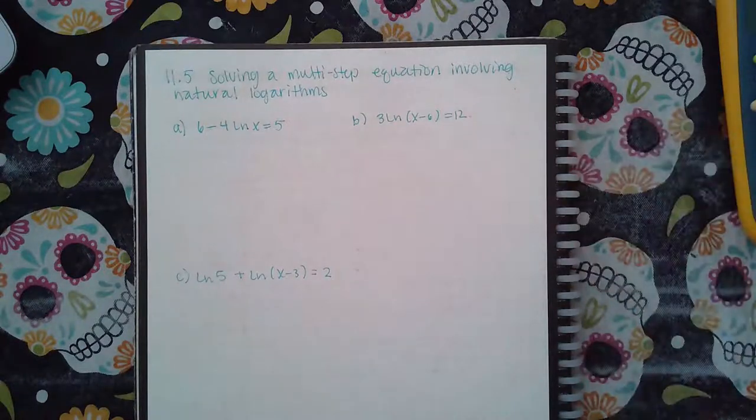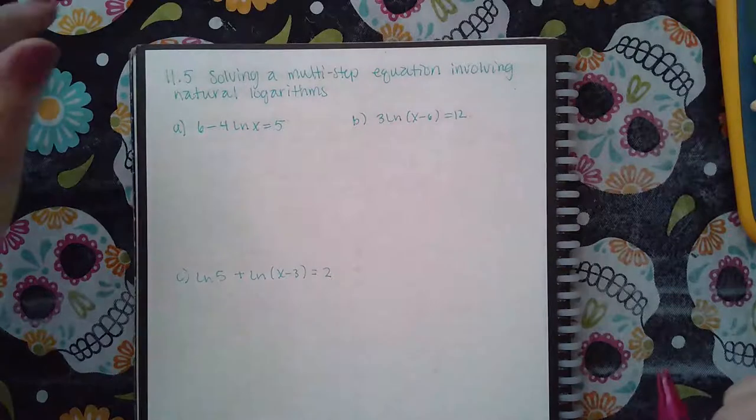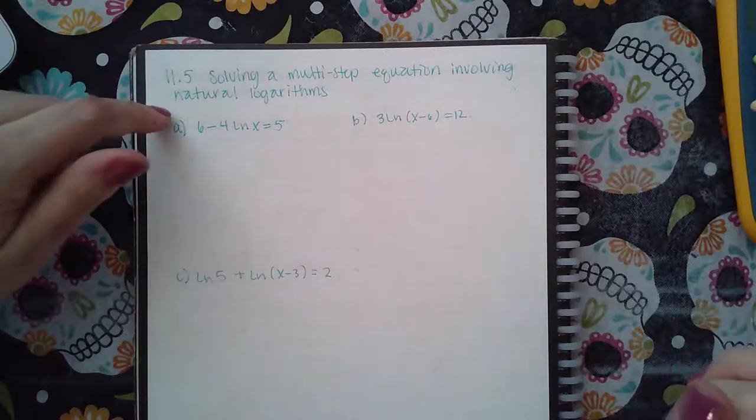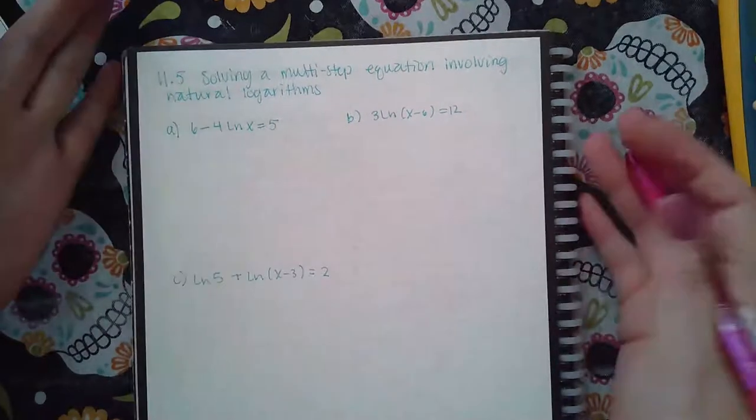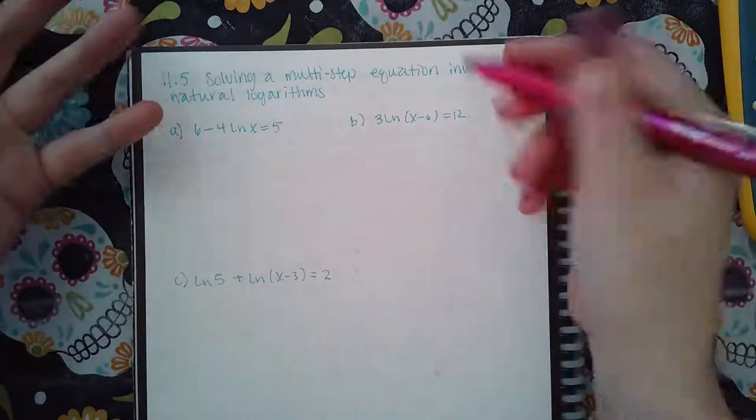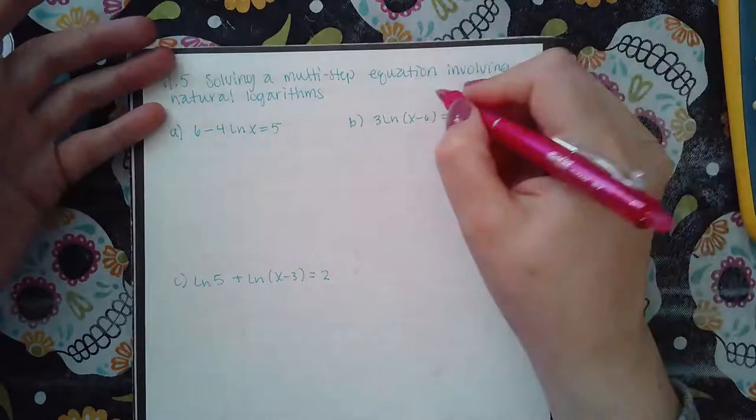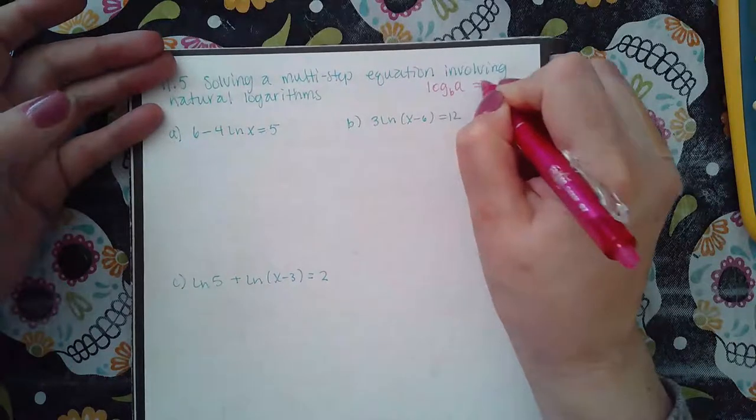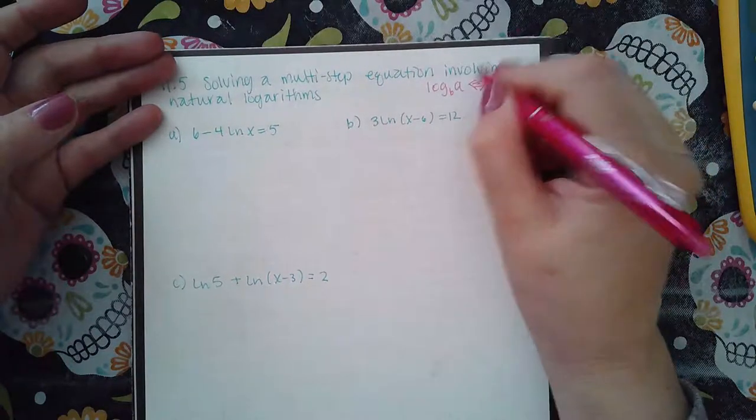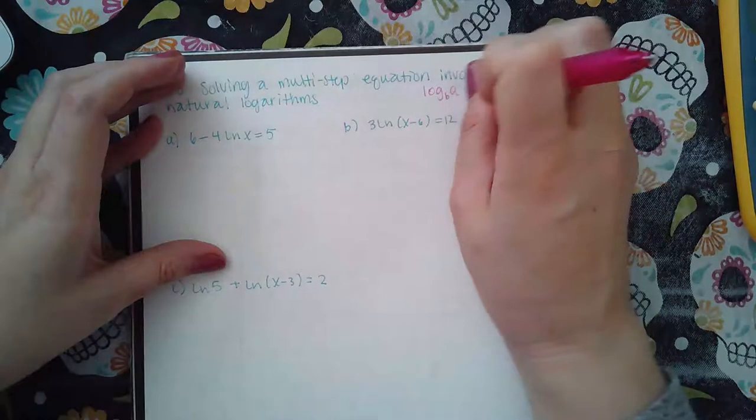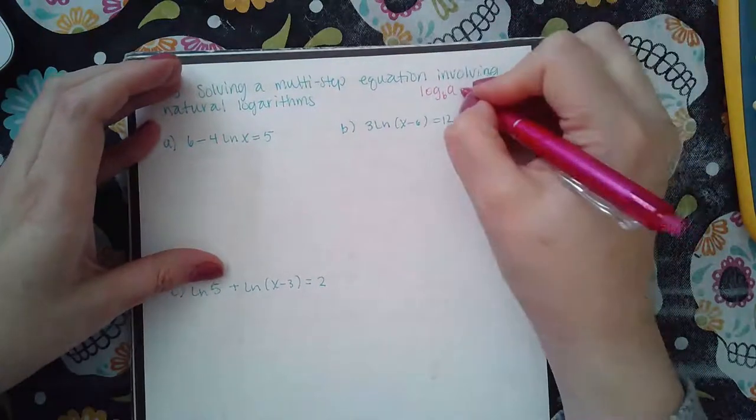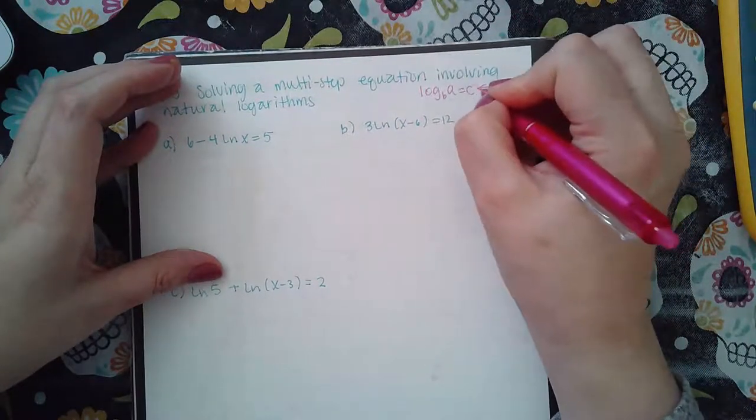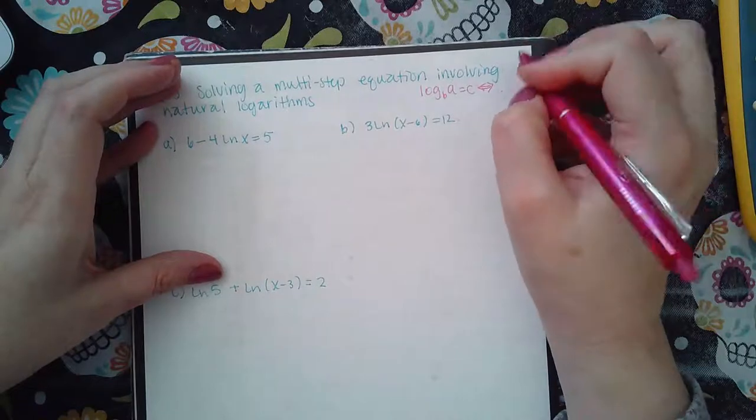Here we have 11.5 solving a multi-step equation involving natural logarithms. Really nothing is changing from the previous regular logarithms, we're still going to apply this rule which can only be applied - not rule but definition - can only be applied if the logarithm part is by itself.